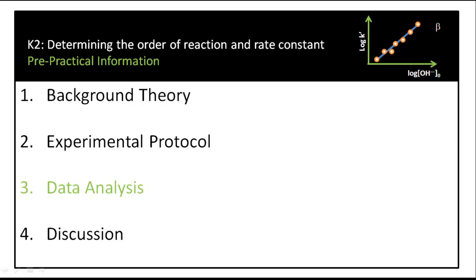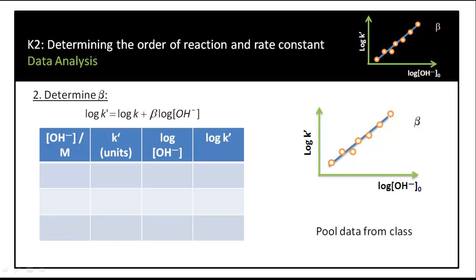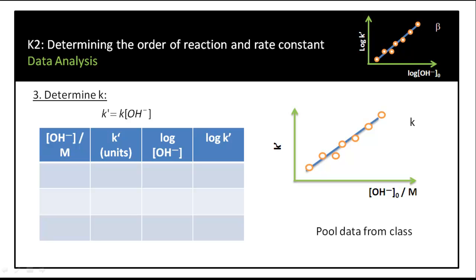For data analysis, first we determine k-prime by plotting pseudo-first-order rate plots — log of absorbance against time — for each hydroxide ion concentration experiment, taking 5 or 6 points from the absorbance data. Second, we determine beta by completing a log-log plot of log k-prime against log hydroxide ion concentration. Finally, we determine k by plotting k-prime against hydroxide ion concentration. It is convenient to pool data across the class to get several data points for these plots.